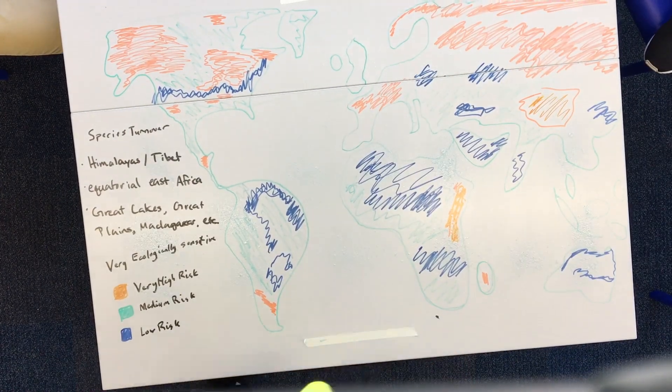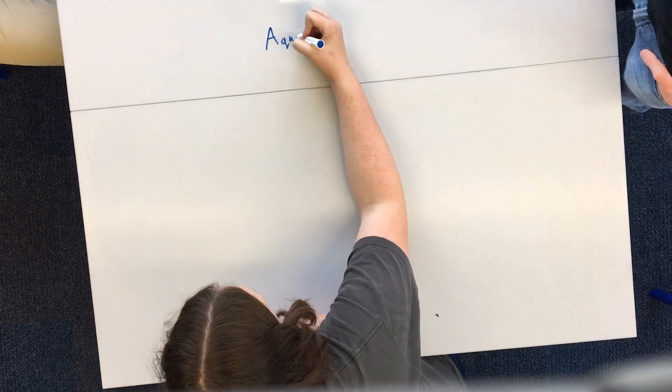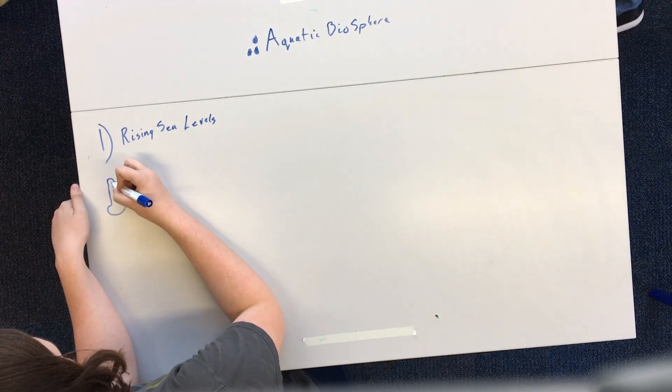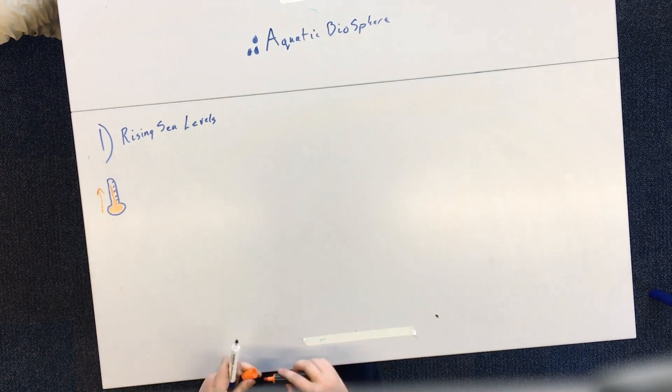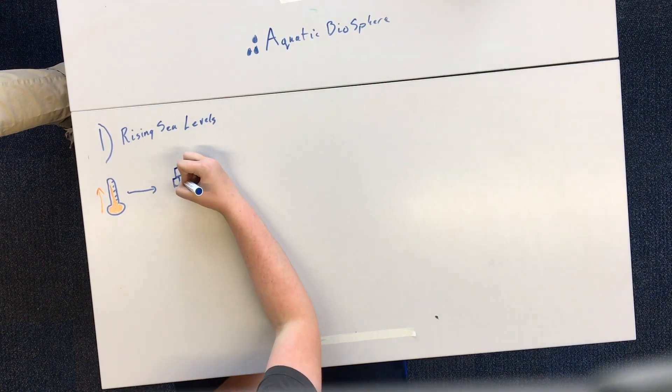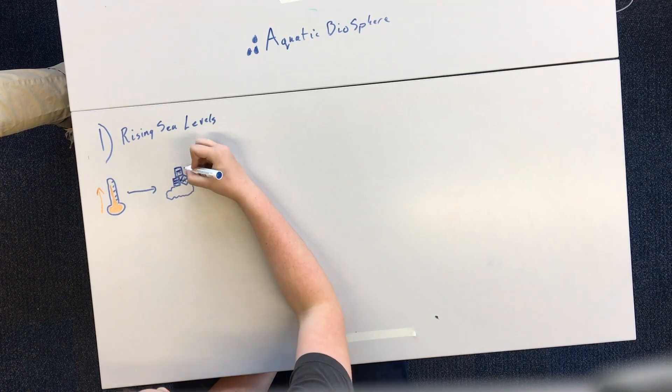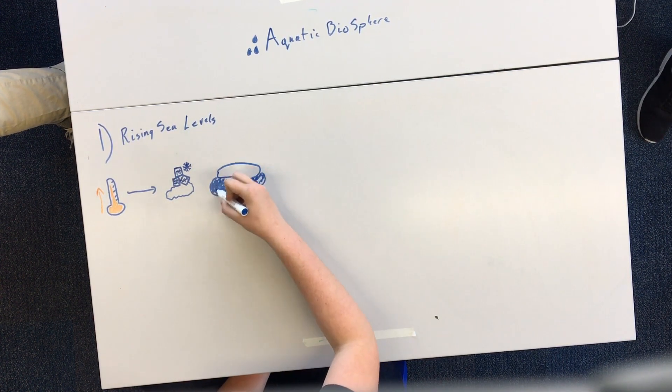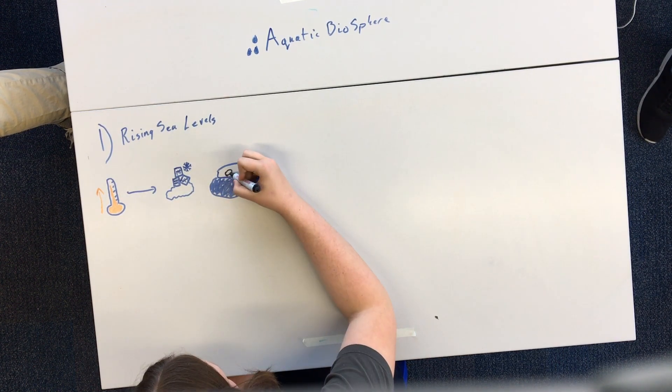So the next thing we're going to talk about is the aquatic biosphere, which is a reference to the biosphere concerning anything aquatic, naturally. As climate change increases and temperatures increase, the sea level is rising because of ice melt. It's estimated that between 1900 and 2016, the sea level has risen almost eight whole inches. This has serious consequences.